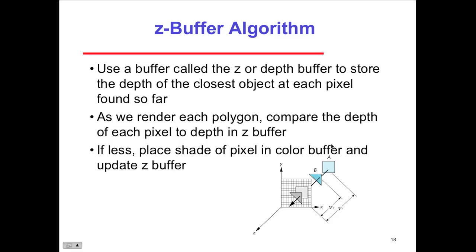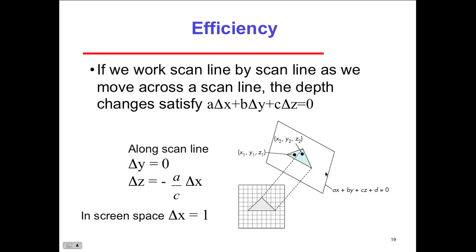The Z-buffer algorithm uses a buffer called the Z or depth buffer to store the depth of the closest object at each pixel found so far. You store the depth along with everything else as you render. As you render each polygon, compare the depth of each pixel to the depth in the Z buffer — if less, place the shade of the pixel in the color buffer and update the Z buffer. This way you know what color ends up on top. For efficiency, work scan line by scan line across the frame.